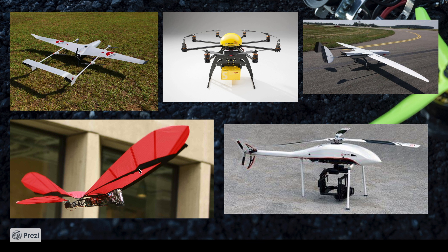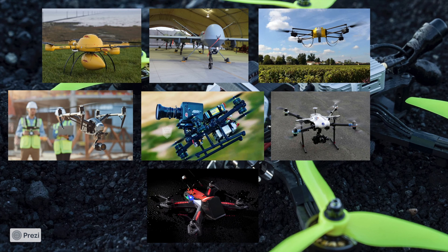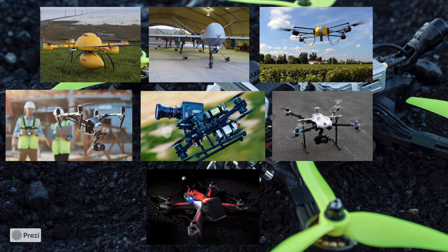The bottom left is an ornithopter, which moves like a bird — its wings mimic the flapping motion, moving up and down. It's slightly inefficient but useful for camouflage purposes. The top left is a VTOL hybrid — Vertical Takeoff and Landing hybrid — where the drone can take off and land vertically, but in the air it moves like a fixed wing, giving much higher efficiency with the added advantage of not requiring a runway and being able to land anywhere.